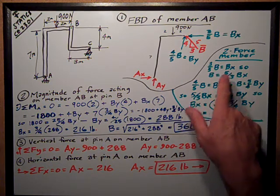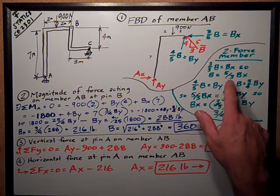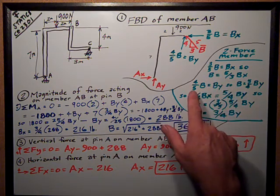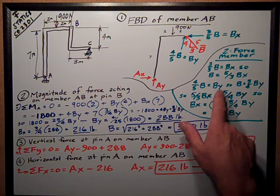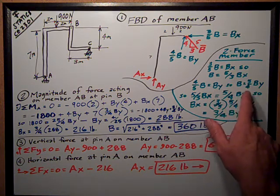3/5 of B equals BX, so B is equal to 5/3 BX, just rearranging that equation. Same thing here with 4/5 of B equals BY, so B equals 5/4 BY.